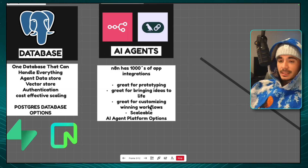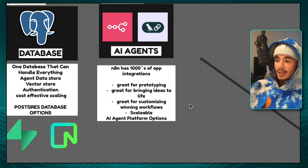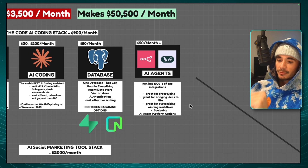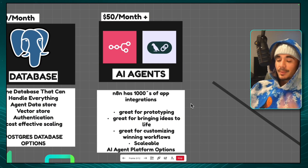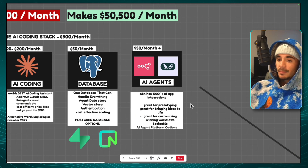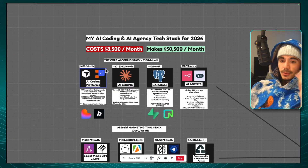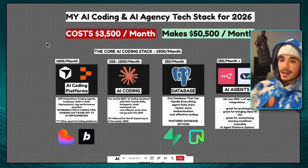N8N is also quite scalable because its pricing has changed from a monthly subscription to a per-usage subscription, which helps us charge clients more efficiently. There are other solutions like make.com, and sometimes there are benefits to using it, but for simplicity we recommend N8N. That in a nutshell is the core AI coding stack, coming in at $900 a month.